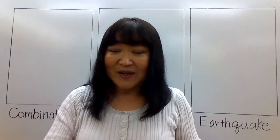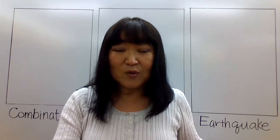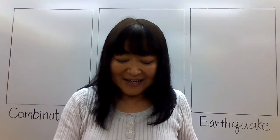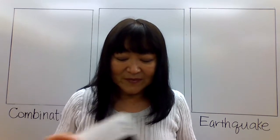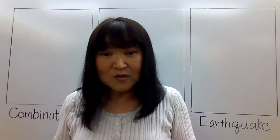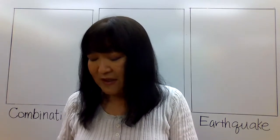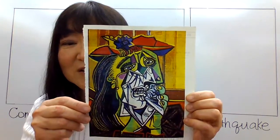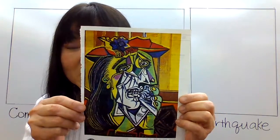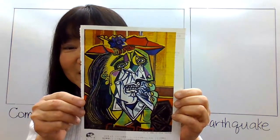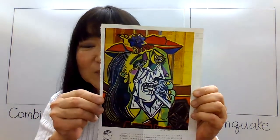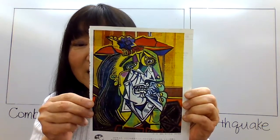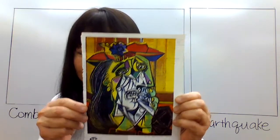Now, last week we worked on the blue period and the rose period. Now this week, the Picasso artwork that we are making a project out of is this. This is titled The Weeping Woman or Crying Woman, and this is a portrait of a woman crying done in abstract style.